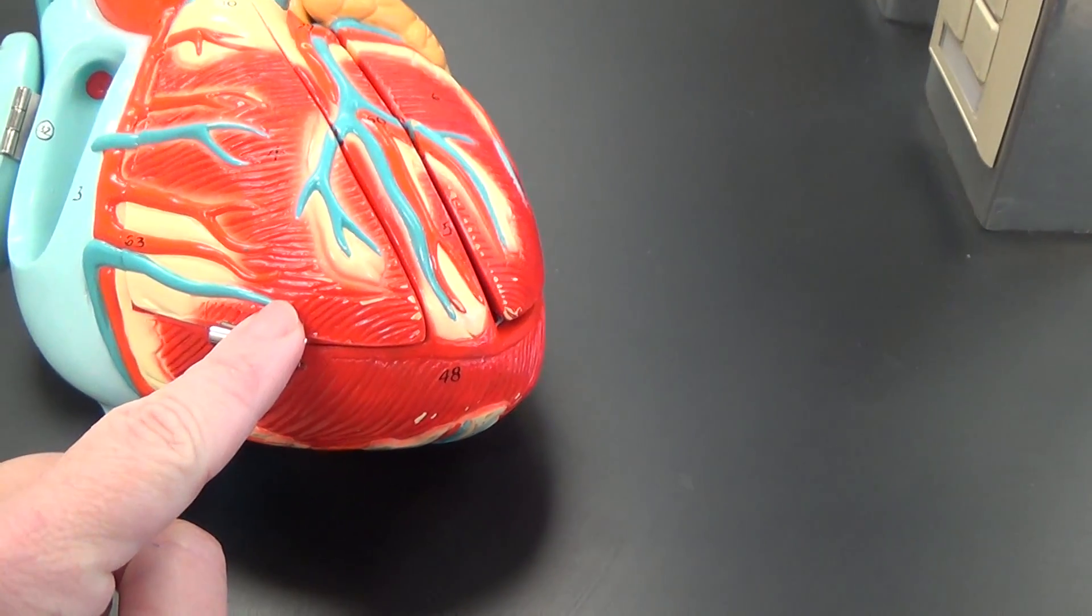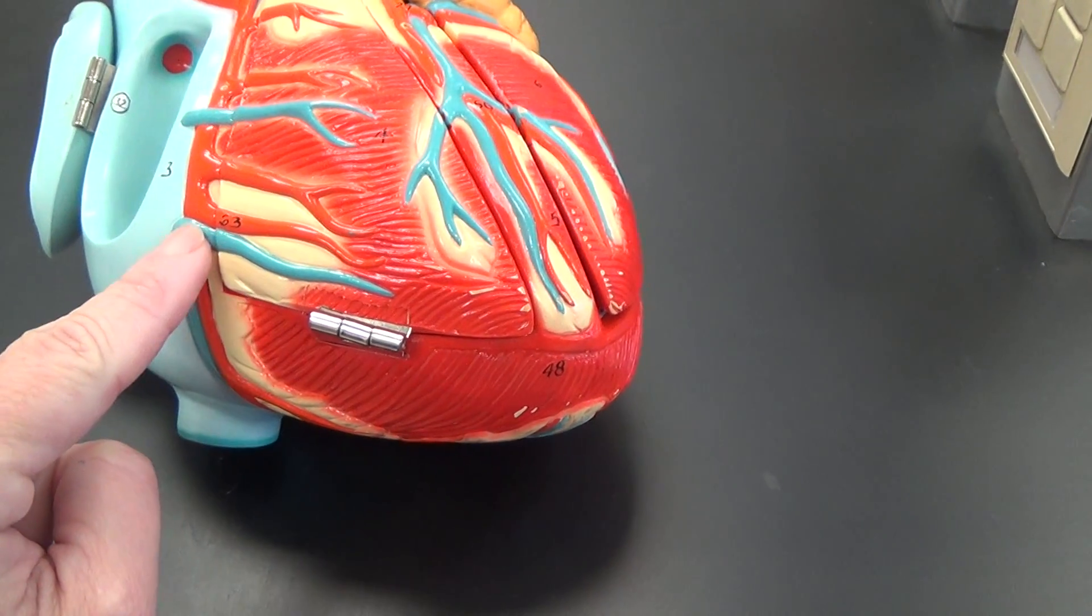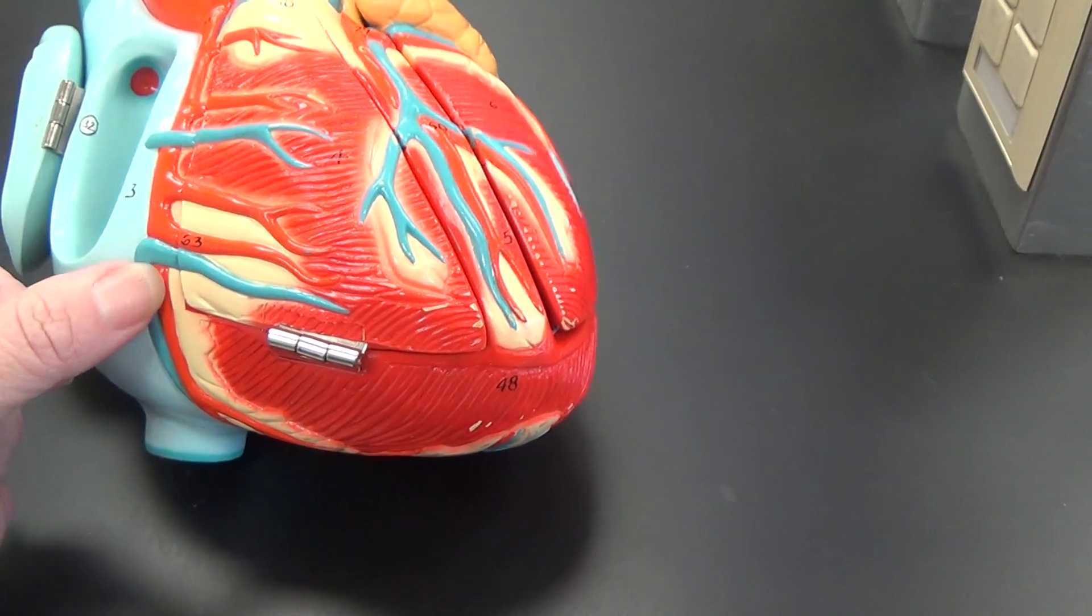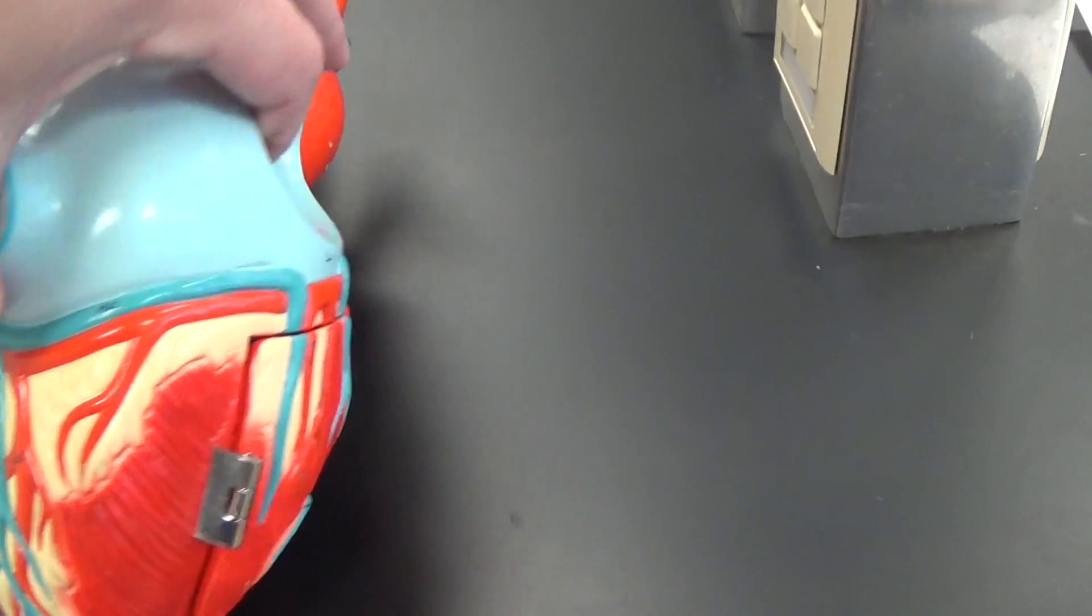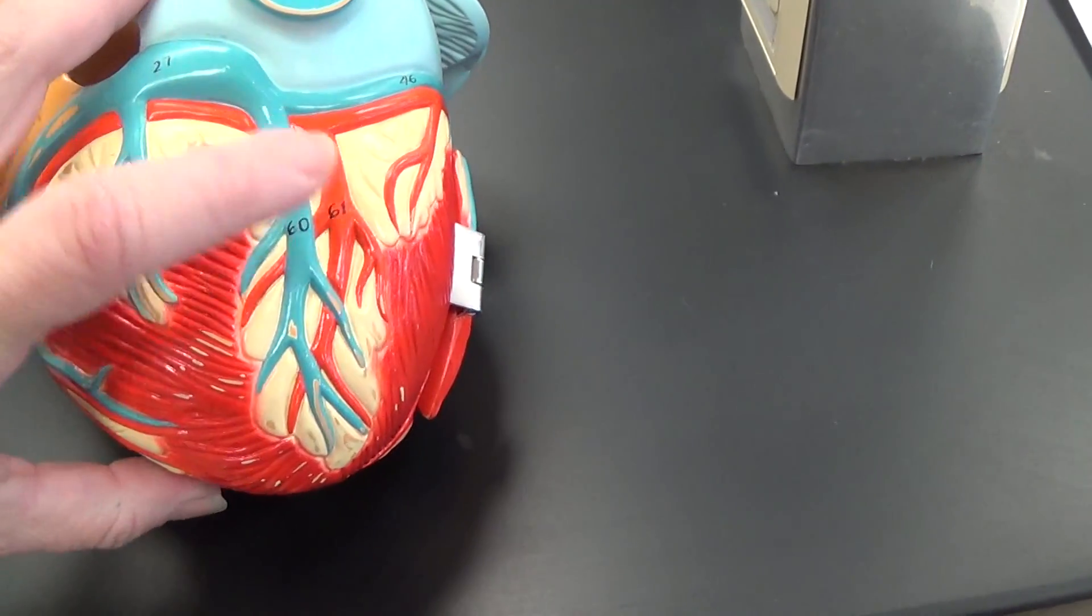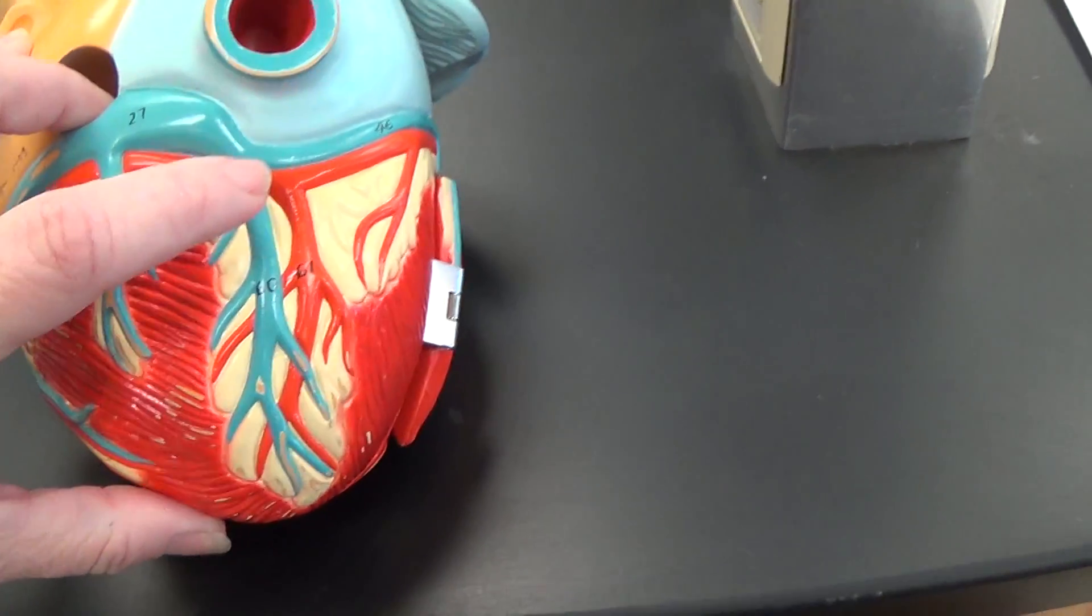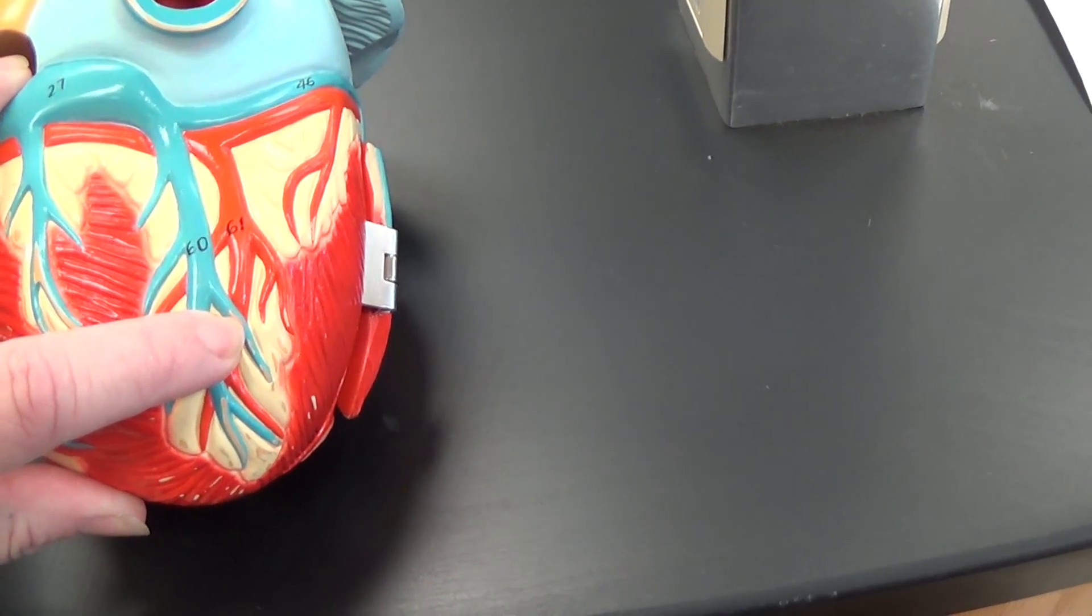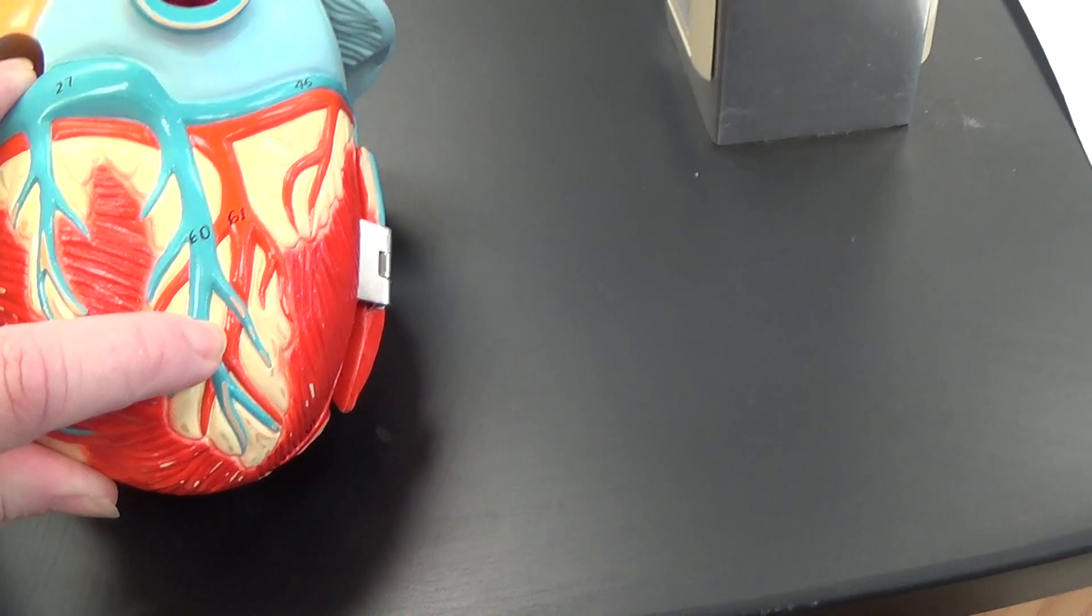The vein that we see starting here is the small cardiac vein, and it comes over here and works its way down and around. The right coronary artery is continuing around back. As we move to the posterior side, we have this major artery, major vein here. This major artery coming down is the posterior descending artery, and this vein is the middle cardiac vein.